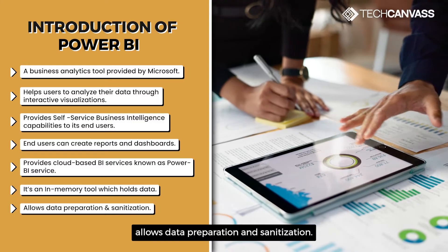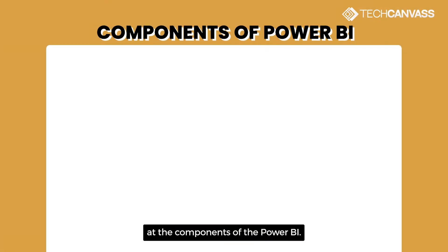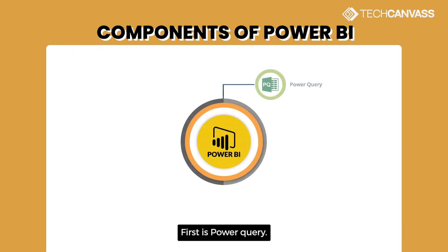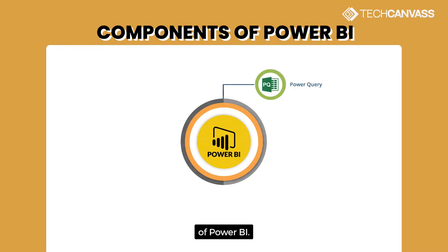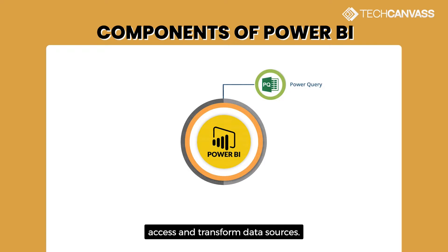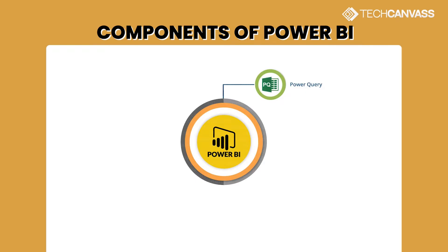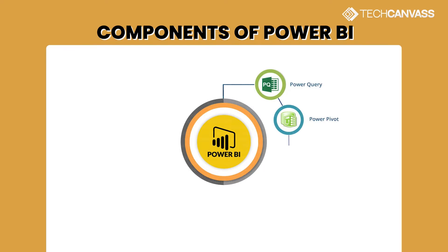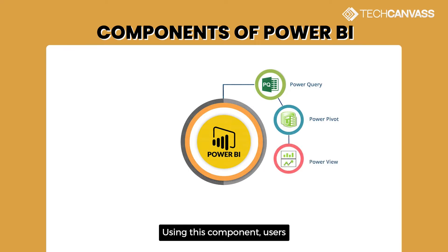Now let us look at the common components of Power BI. Power BI has eight components. First is Power Query — it's a very powerful component of Power BI used to search, access, and transform data sources. Power Pivot is used for data modeling for in-memory analysis. Power View allows users to build a visualization layer and create reports.